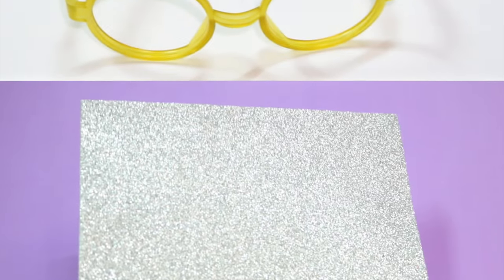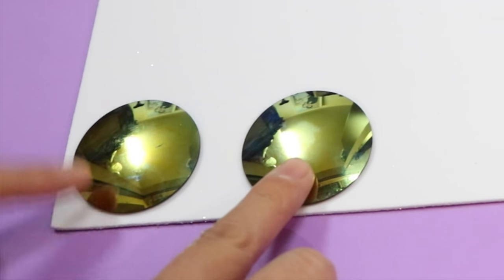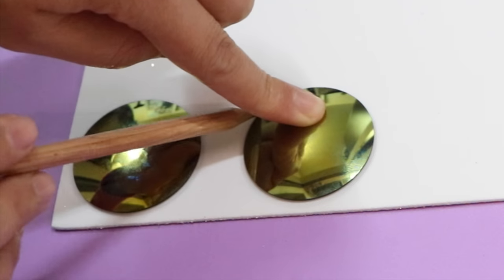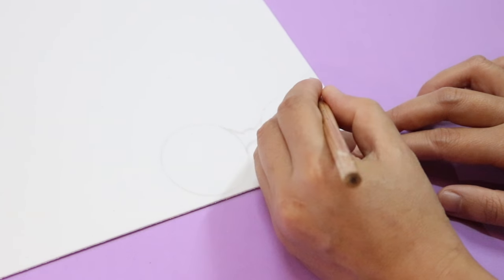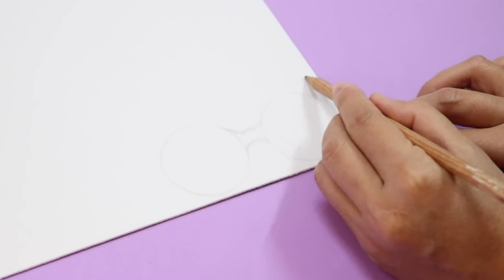OK, now to make the frame for my glasses, I'm gonna use this foam paper. Flip it over, then place the lenses on it before tracing out 2 circles. Draw on an art shape to connect the 2 circles like so, and then give each one a cat ear on top.